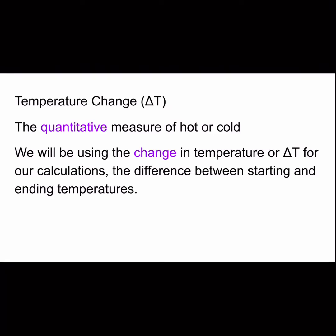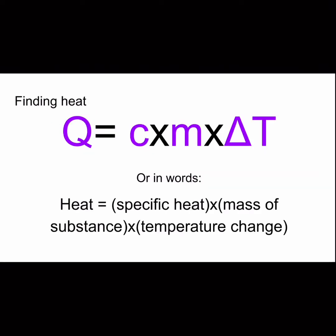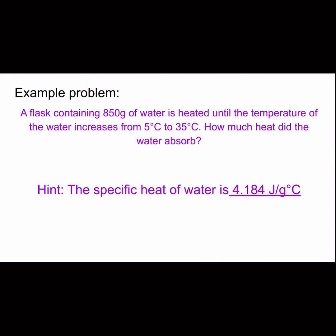Let's do an example. A flask containing 850 grams of water is heated until the temperature of the water increases from 5°C to 35°C. How much heat did the water absorb? The specific heat for water is already known, so it's 4.184 J/g°C.